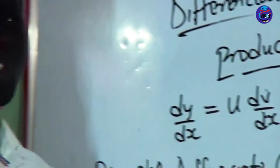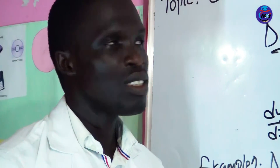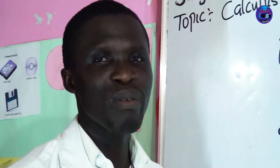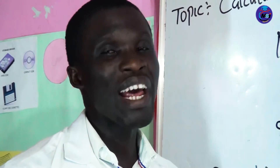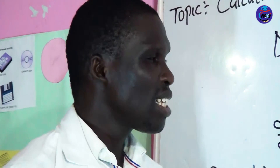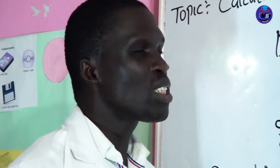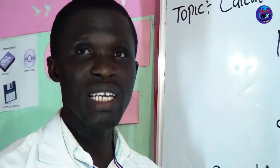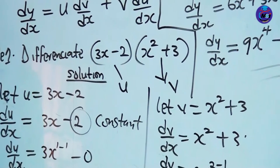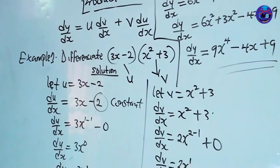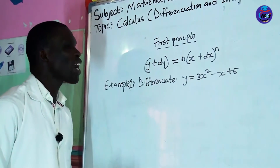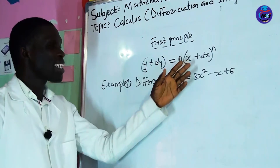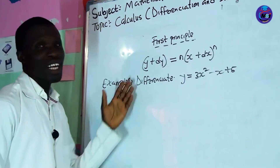Now we want to go to first principle — that is another method of finding differentiation. The methods you apply in general equation you cannot apply in product rule, so that is the essence of all these methods. You need to learn all of them. The formula for first principle is: y plus δy equals n times (x plus δx) raised to power n.